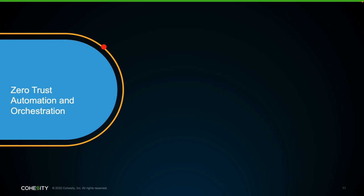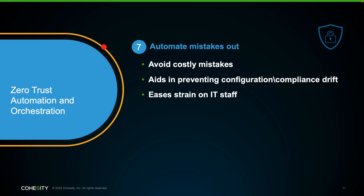And finally, zero trust automation and orchestration. Automate the mistakes out — people are prone to errors, and employing an automation and orchestration solution can help avoid mistakes that cause costly outages. Automation and orchestration can help prevent configuration drift that takes systems out of an organization's hardened compliance policy. Over time, IT systems go through multiple updates and upgrades, which can cause configuration drift. Employing automation can keep your systems in tip-top shape and avoid vulnerabilities. IT ops and sec ops teams are typically fast-paced, and automation and orchestration can ease strain on IT staff by removing repeatable, tedious day-to-day tasks, allowing IT staff to become more strategic in nature.